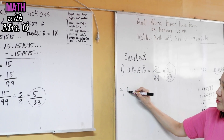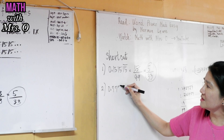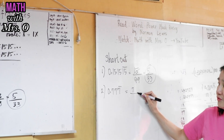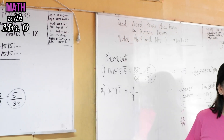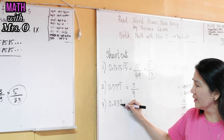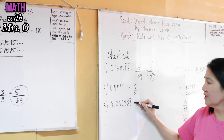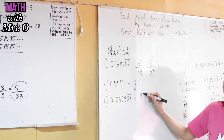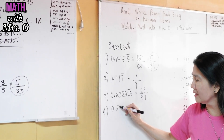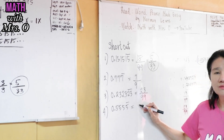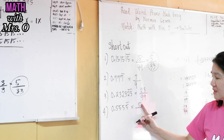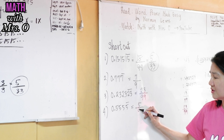In our second example, we had 0.777 bar. So as a fraction that's 7 over 9 — one repeating decimal, so denominator is 9. What if we have 0.232323 bar? That's 23 over 99. What if we have 0.55555 bar? That's 5 over 9 — only one repeating decimal, so denominator is 9.